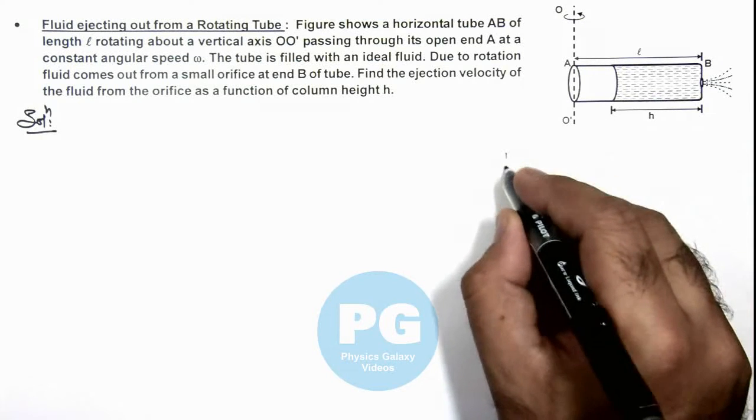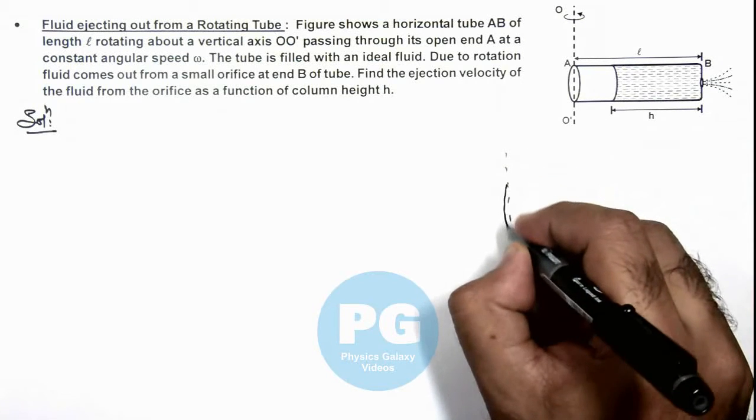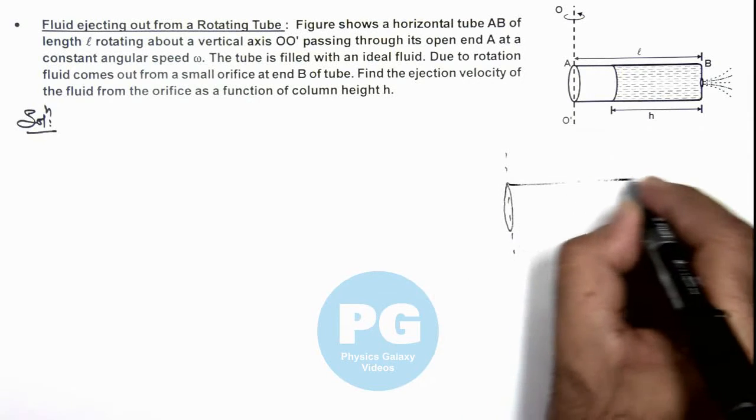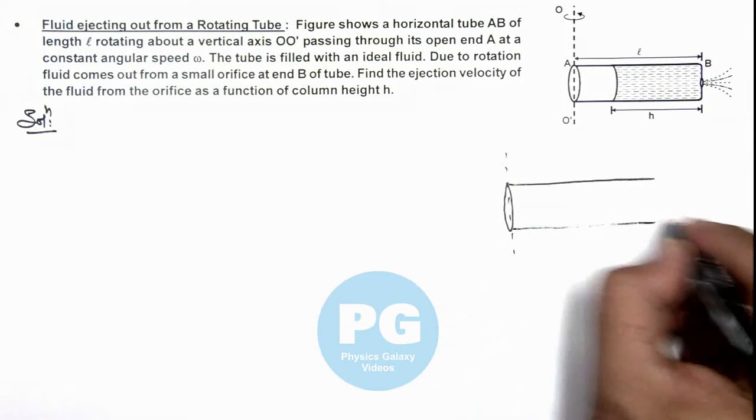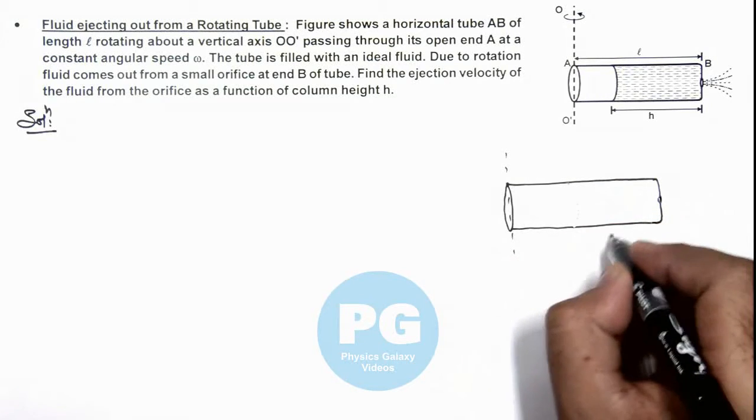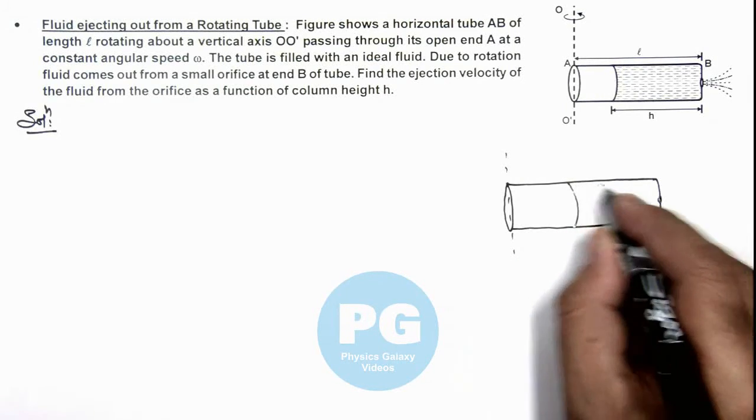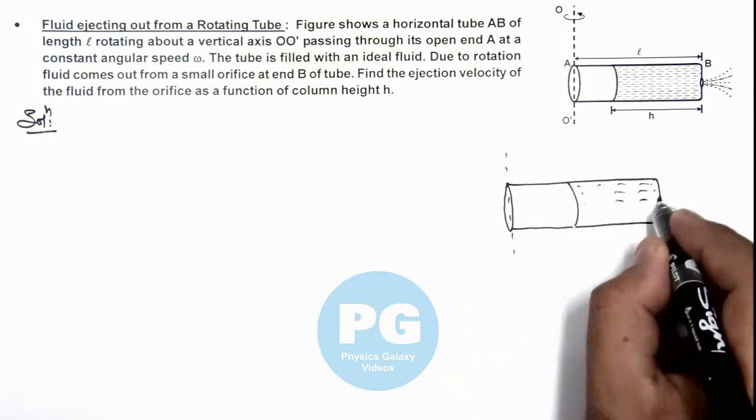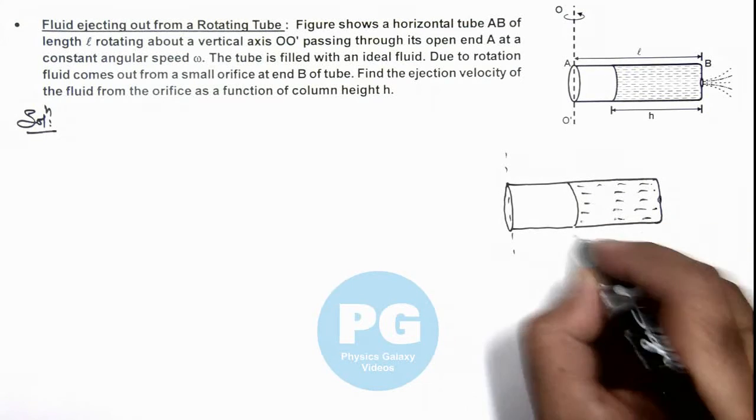So if we redraw the figure, the situation is this. Here we are having a tube, and in this situation if the liquid is filled up to a column height h and the total tube length is L.